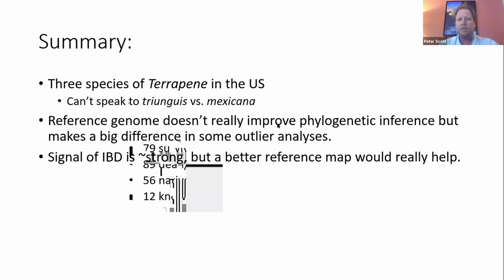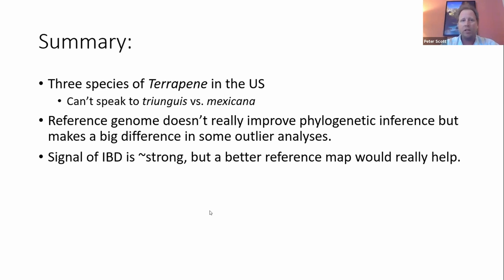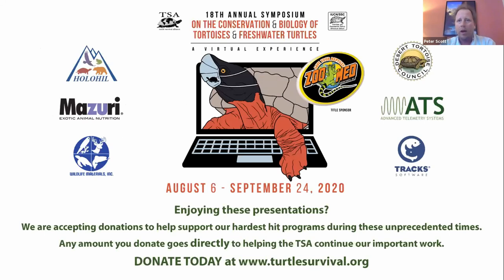In summary, it looks like we have at least three species of box turtle in the US, but we can't speak to what species the three-toed box turtle belongs to. The reference genome doesn't improve everything, but it does make a big difference in outlier analyses, and the signal of isolation by distance is relatively strong. Regarding whether we recommend elevating triangles to a species — Carolina or Mexicana — we don't have the sampling across the landscape to show that, and since we don't have any true Mexican individuals in our sample, we can't say where it belongs. But we have strong support that it is probably a species.